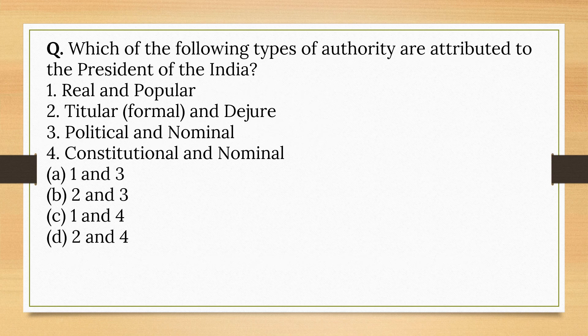Which of the following types of authority are attributed to the President of India? Real and popular — no. Titular and de jure — yes, given to the Indian President. Political and nominal — no. Constitutional and nominal — yes. So the correct option is Option D.